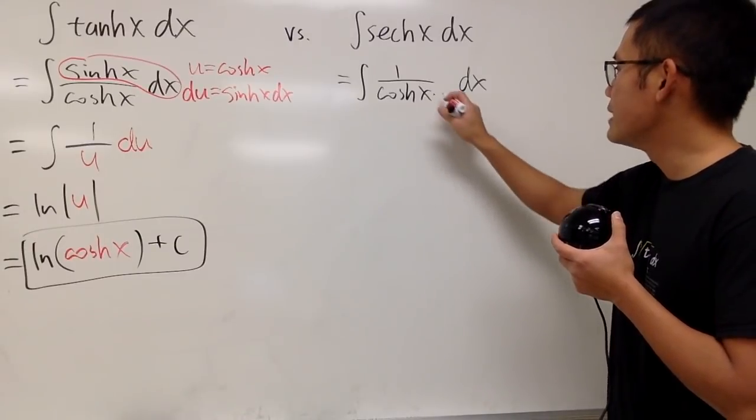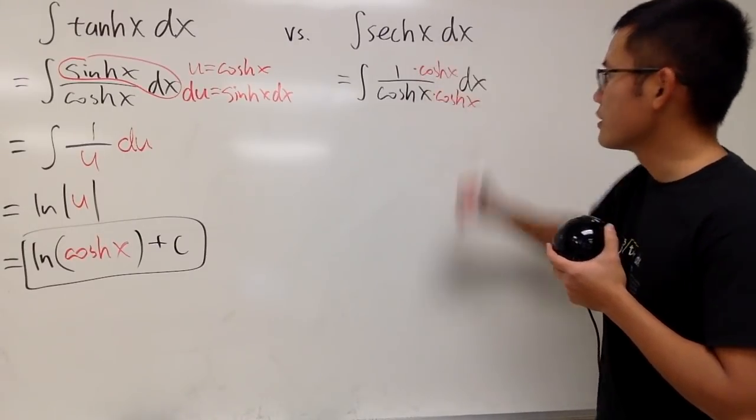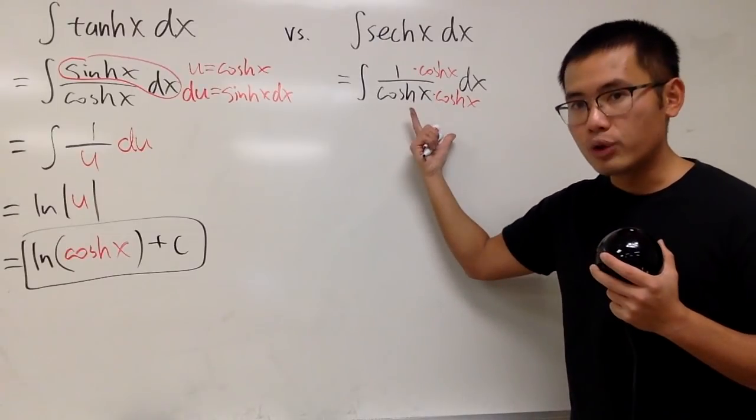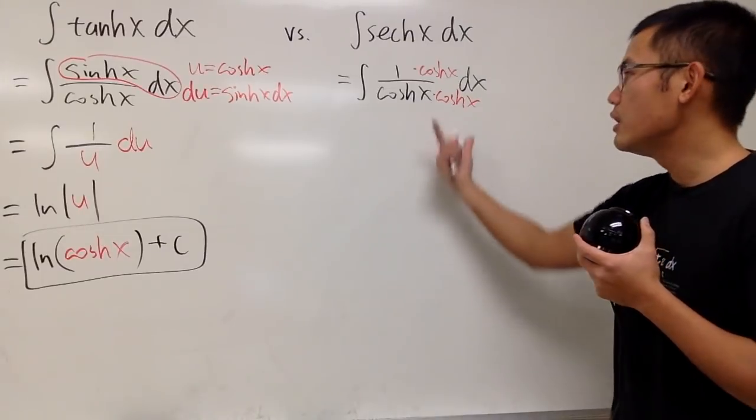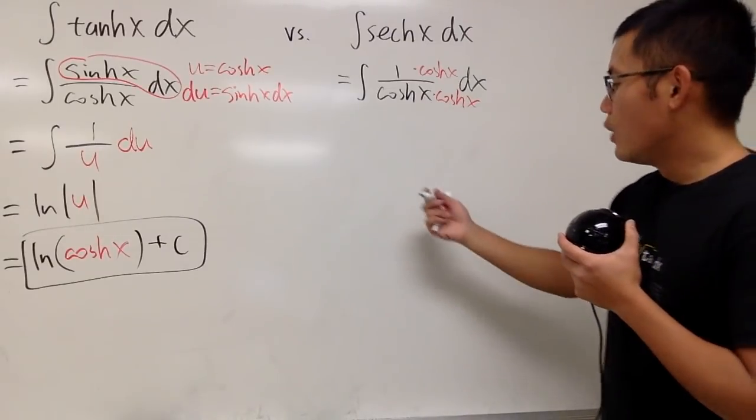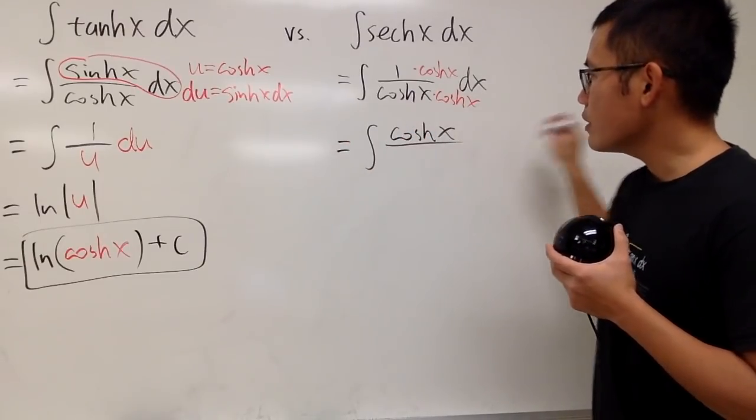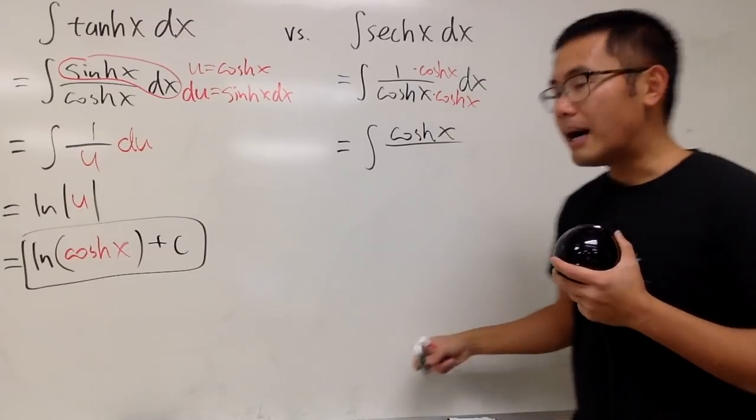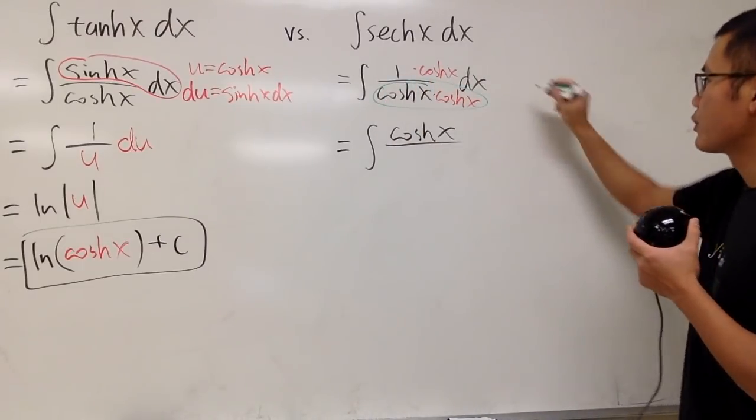So I will multiply this by cosh x on the bottom and also on the top, because that way I can produce cosh squared x on the bottom, and we know a much better identity to help us out for that. Have a look here. This is the integral: on the top is cosh x, over on the bottom, cosh squared x.